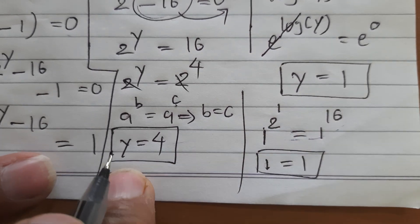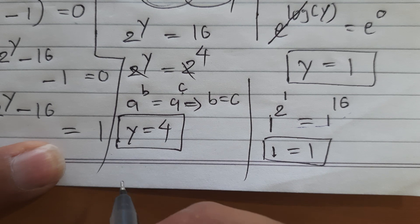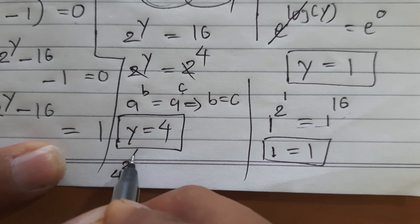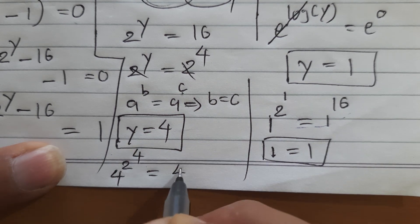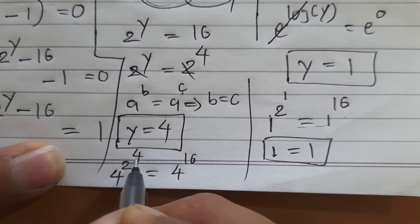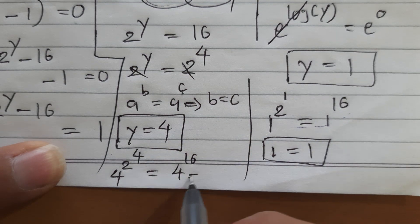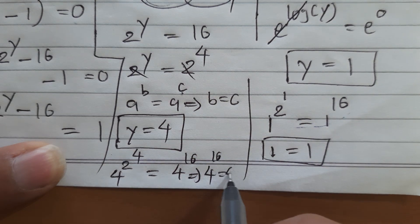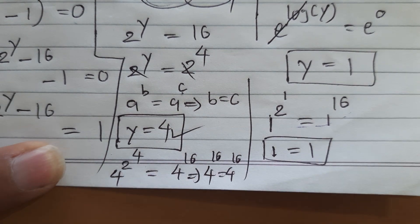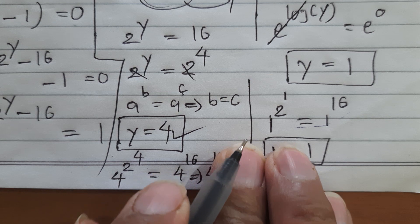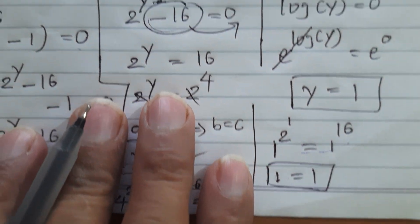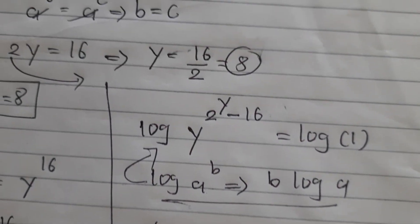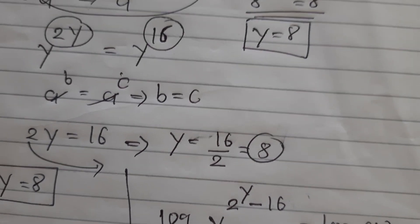For y equals 4: 4 to the power of 2 to the power 4 equals 4 to the power 16. Since 2 to the power 4 is 16, we get 4 to the 16 equals 4 to the 16. This is also correct. So friends, if you enjoyed this video please give it a like, and if you are new to my channel please subscribe. Thank you!